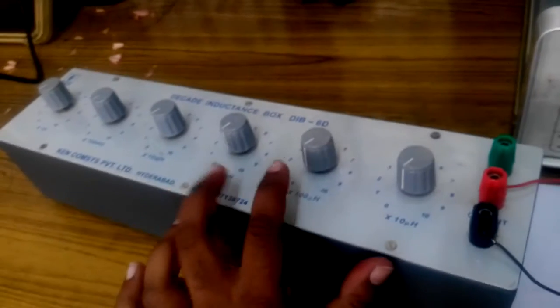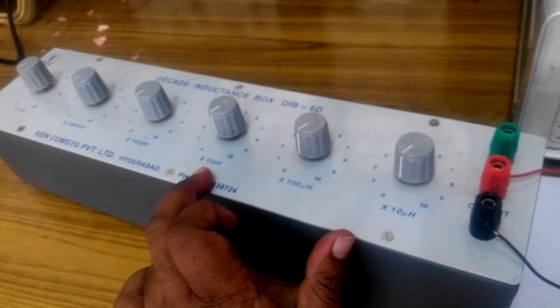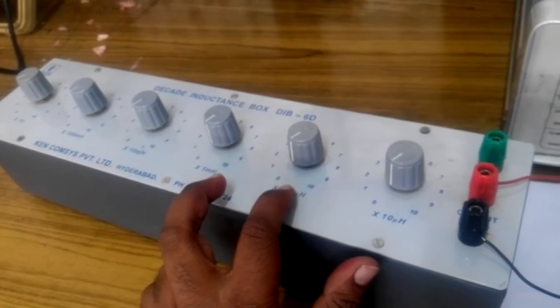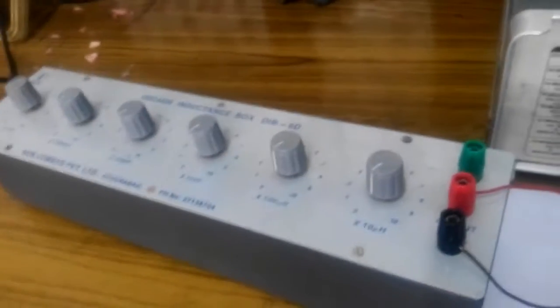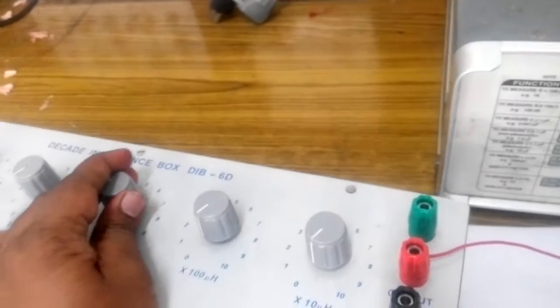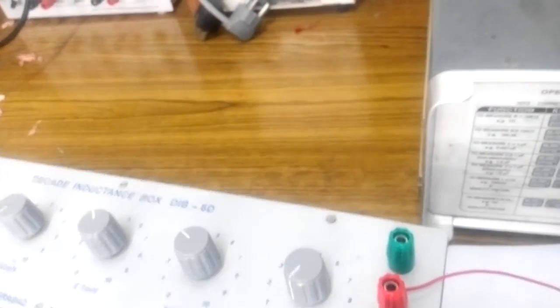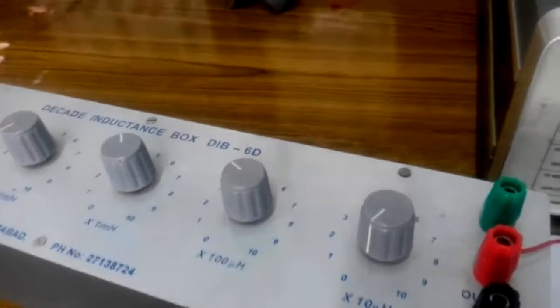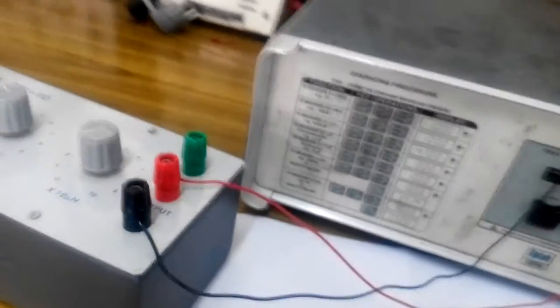Now in the decade inductance box, we will be using only the two ranges over here: 1 millihenry and 100 microhenry. First, apply an inductance of around 4.5 millihenry. So the applied value of inductance is 4.5 millihenry.